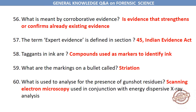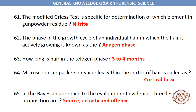What are the markings on a bullet called? Striation. What is used to analyze for the presence of gunshot residues? Scanning electron microscopy used in conjunction with energy dispersive X-ray analysis. The modified Grease test is specific for determination of nitrite in gunpowder residue. The phase in the growth cycle of an individual hair in which the hair is actively growing is known as the anagen phase. How long is hair in the telogen phase? Three to four months.